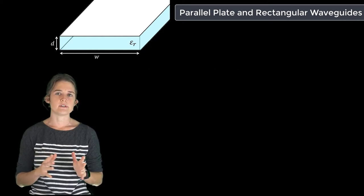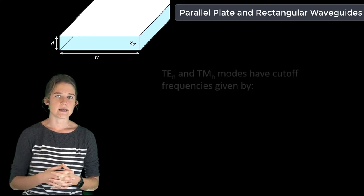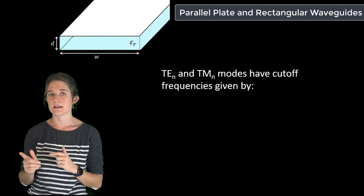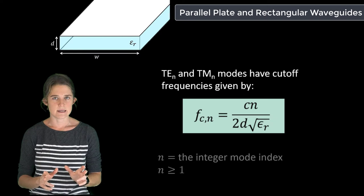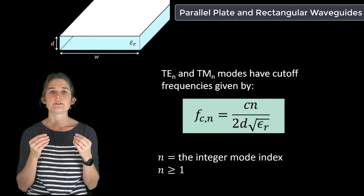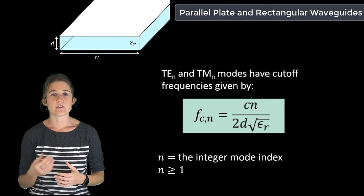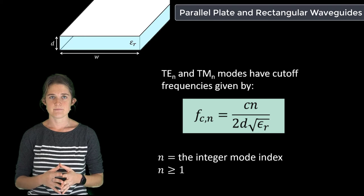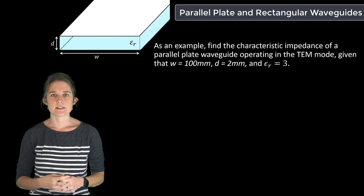The higher order modes of a parallel plate waveguide are also often used, so it's worth noting that higher order modes of both TE and TM come in at frequencies given by this equation, where n is an integer greater than or equal to 1, which is used to distinguish the various modes. Each of these modes will also have their own characteristic impedance and phase velocity.